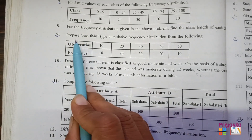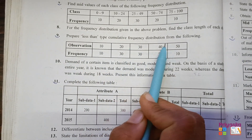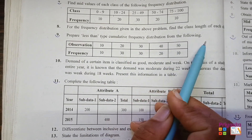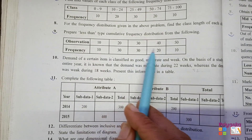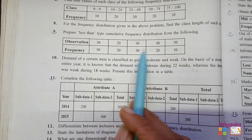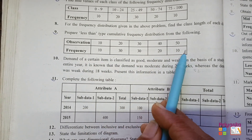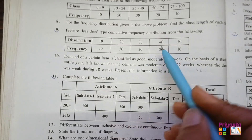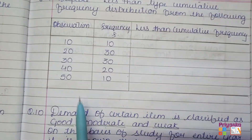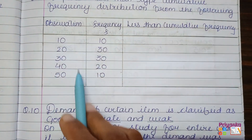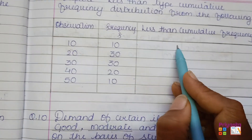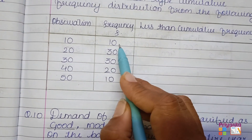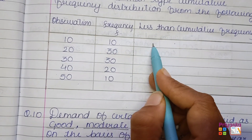Question number 9: prepare a less than type cumulative frequency distribution from the following. As you can see, the observation data is given in discrete values and the frequency is given. Just take the information into your book. When the observation is given in discrete form, there is no need to include 0 — you can count the frequency directly starting from 10.